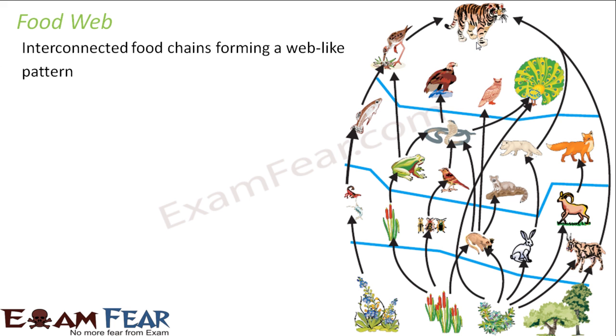When I say chain, it was a straight line. When I say web, what comes to your mind? Generally we think of a spider web — that net-like structure prepared by a spider. So it is a hodgepodge net-like structure. A food web is nothing but interconnected food chains forming a web-like pattern.